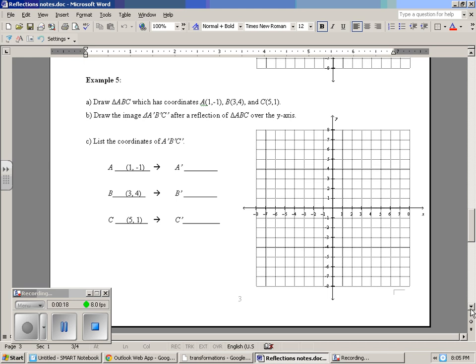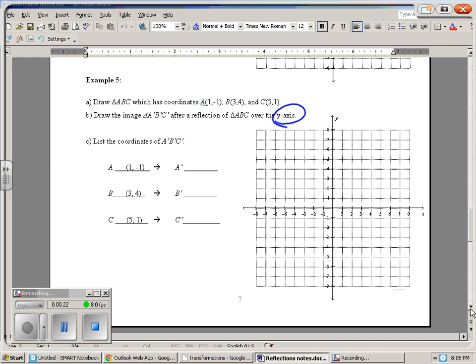So the same triangle, draw the image, but this time after reflection over the y-axis. Alright, so (1, -1) is A, B is (3, 4), and then C (5, 1) is C.